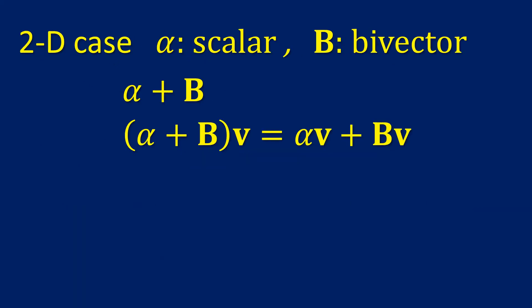To give an answer that is at a high school level that students will find acceptable, let's consider a two-dimensional case. We'll have a scalar alpha and a bivector B. A bivector is a section of a plane. When we combine those two pieces of information, we form this sum. So what happens?